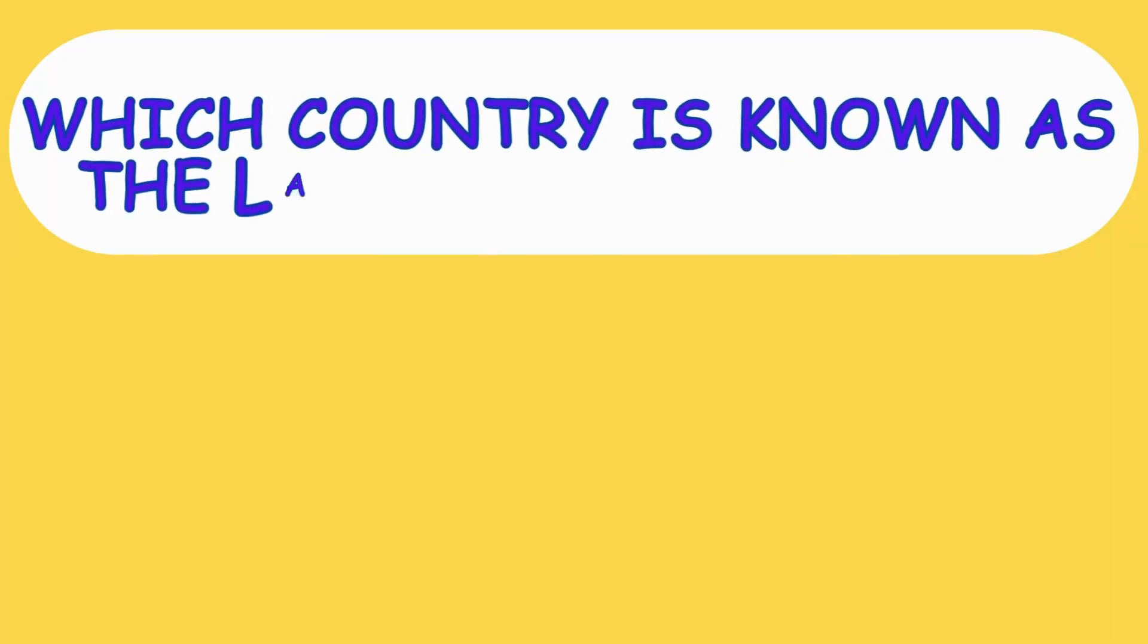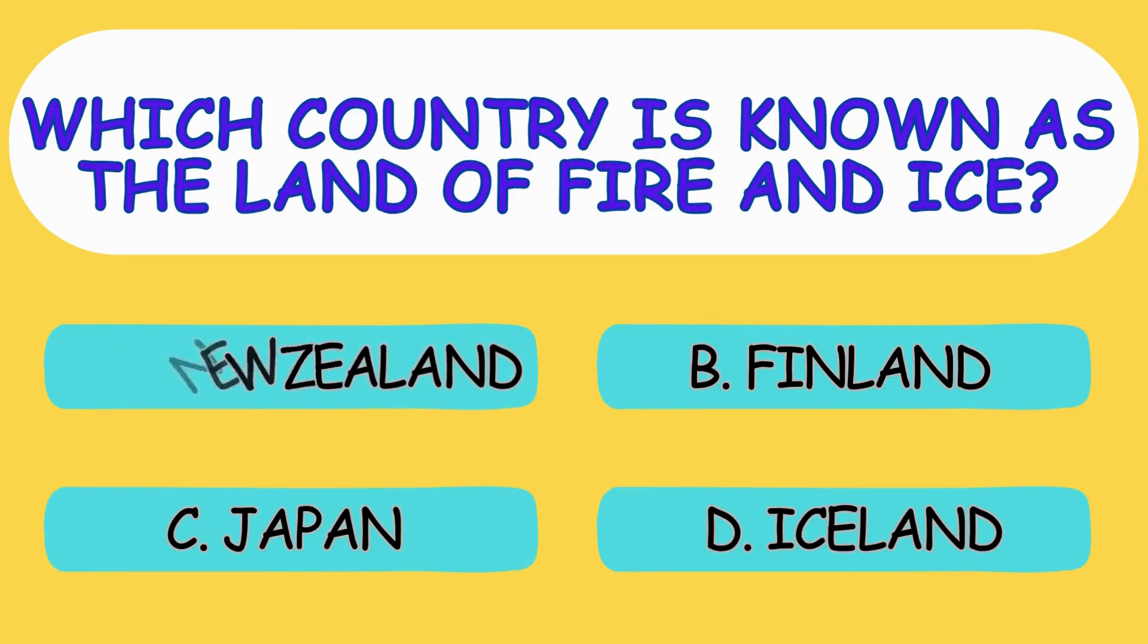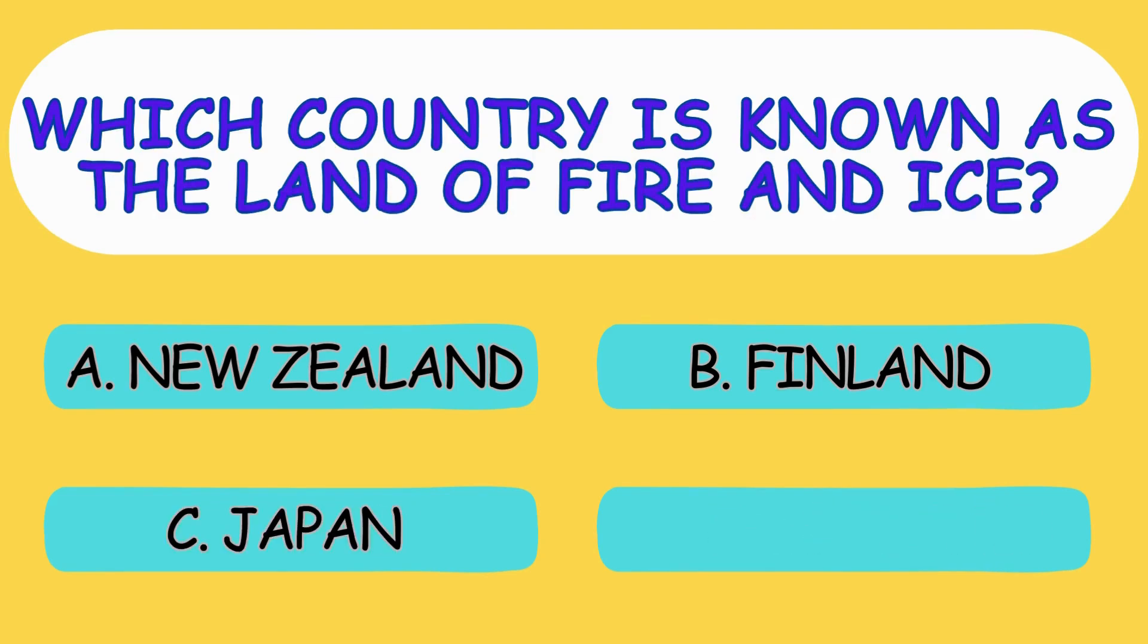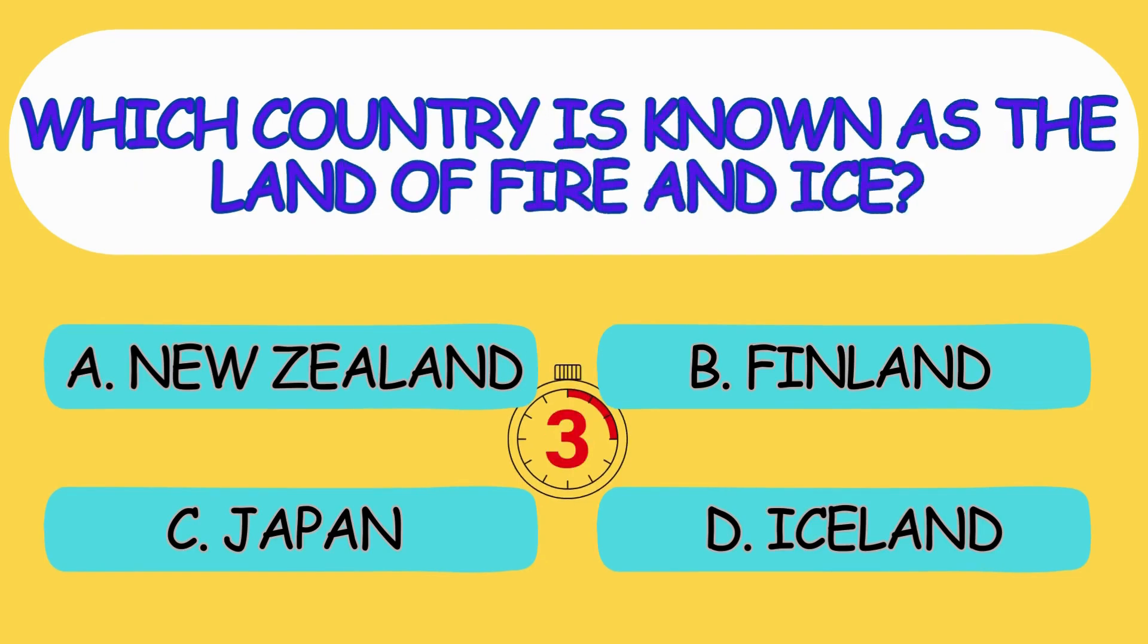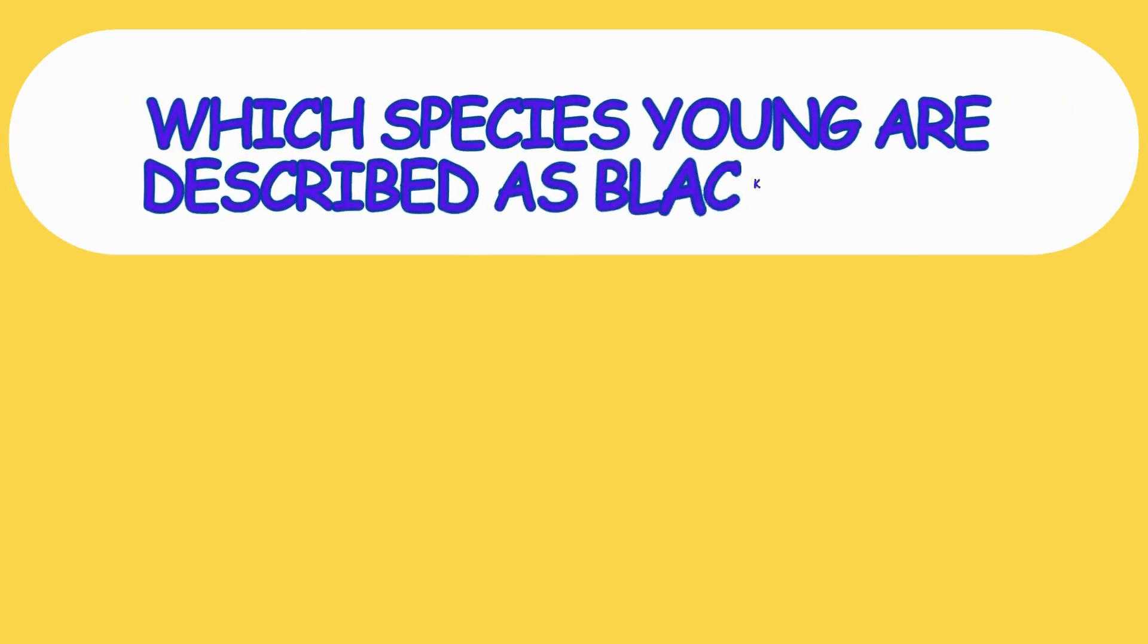Which country is known as the land of fire and ice? A. New Zealand, B. Finland, C. Japan, D. Iceland. The answer is option D, Iceland.